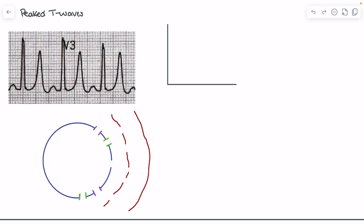Let's talk about hyperkalemia and some of the ECG changes we see. In particular, we're going to focus on peaked T waves — specifically how hyperkalemia actually leads to the characteristic peaked T waves that we might see on the ECG when someone is experiencing hyperkalemia.